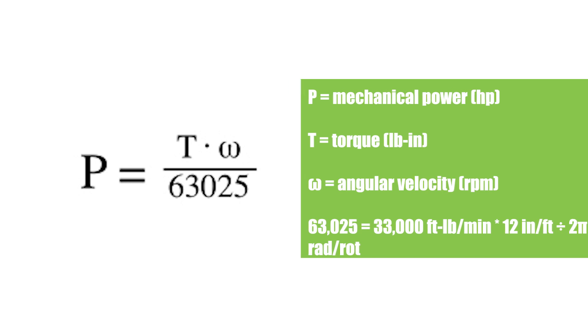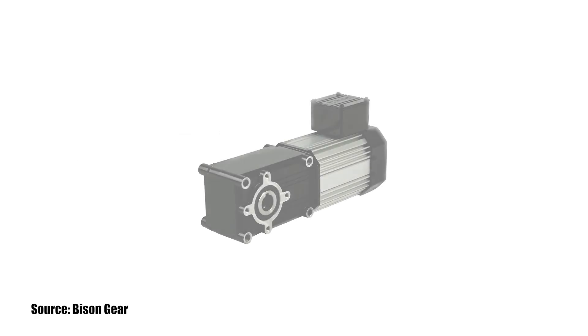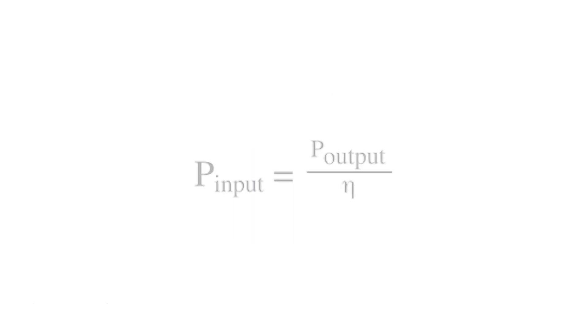When sizing a gear motor, the choice of which equation to use for mechanical power depends on the units of torque and speed that are given in the application. However, when determining the input power required for the motor, the efficiency of the gear motor assembly at transmitting that power to the load must be taken into account.